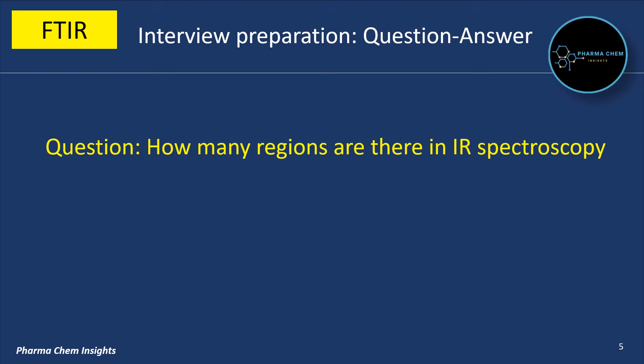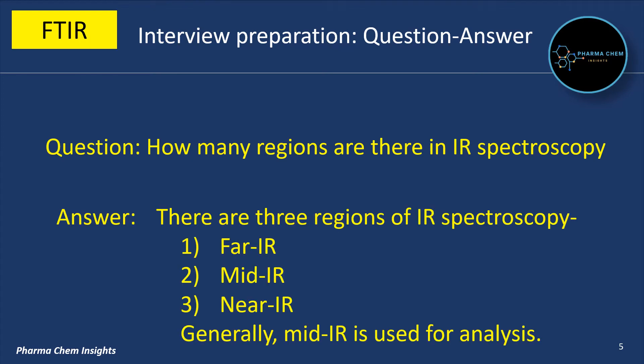How many regions are there in IR spectroscopy? There are three regions of IR spectroscopy: Far IR, Mid IR, and Near IR. Generally, mid IR is used for analysis in industry.